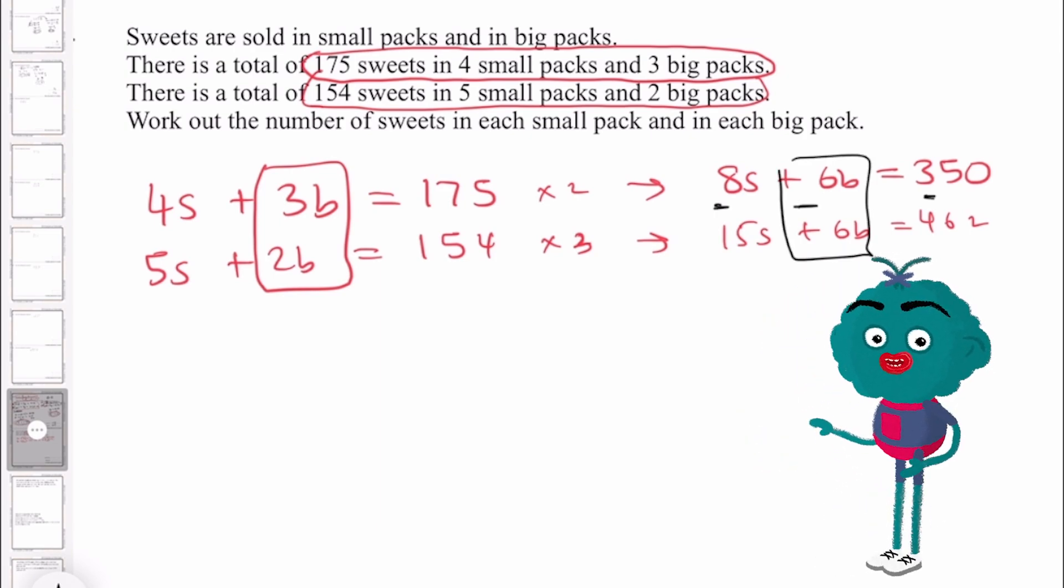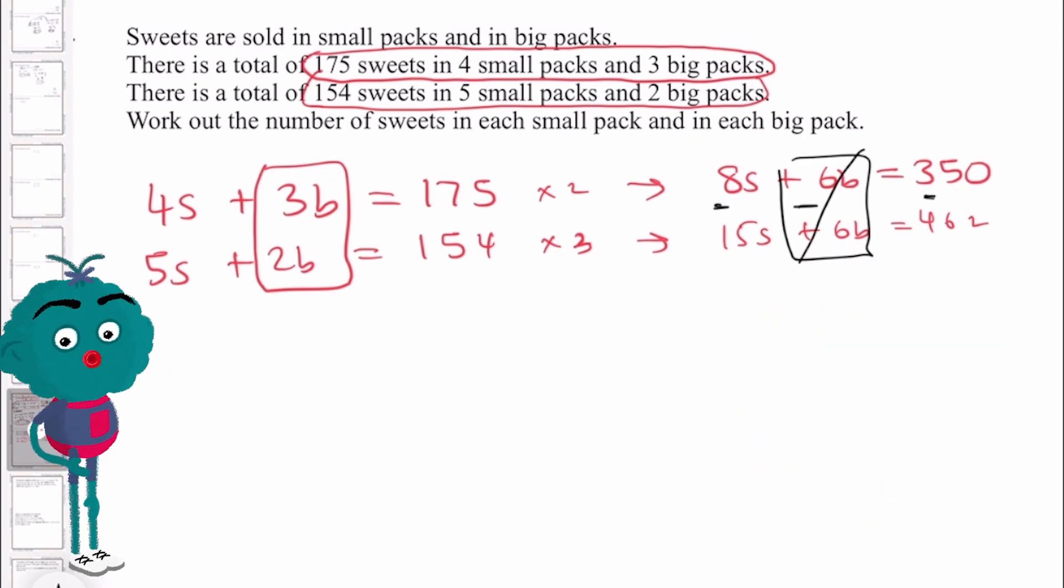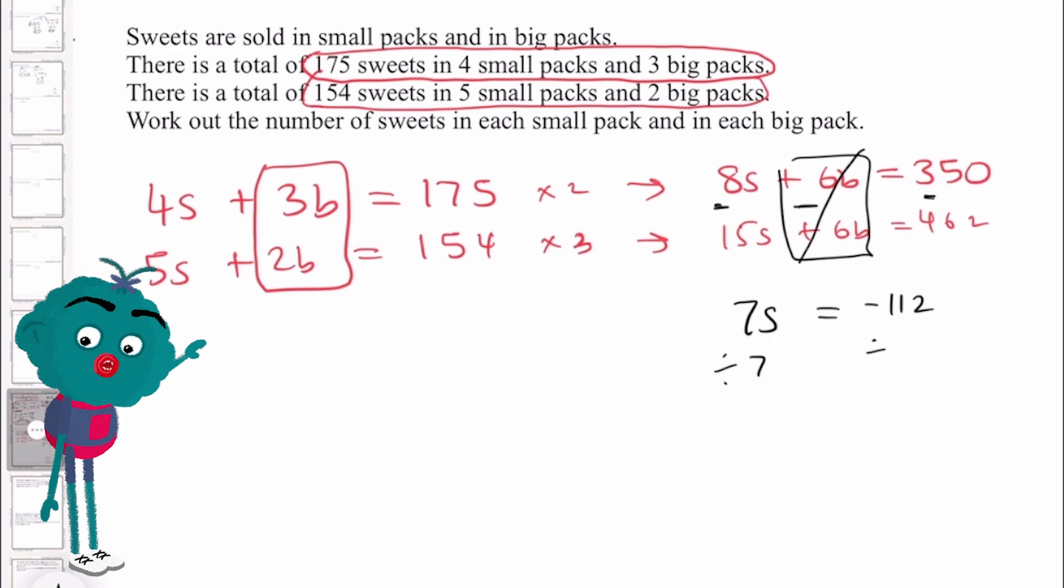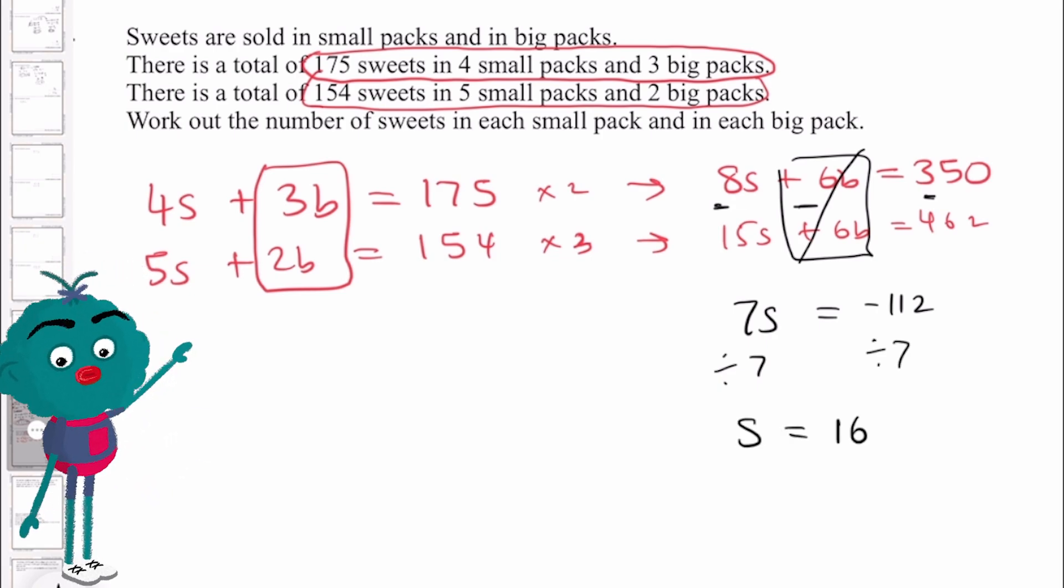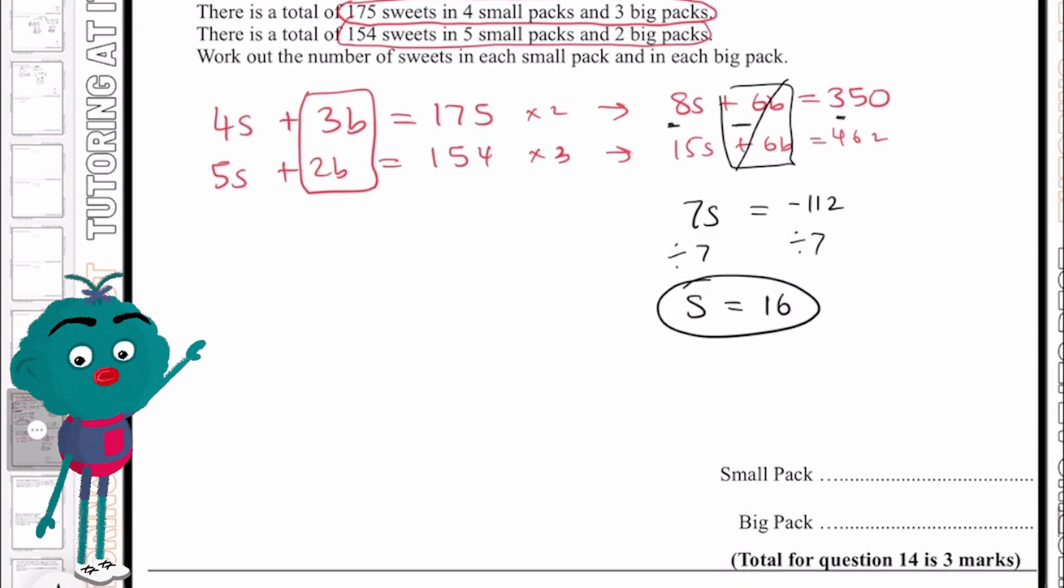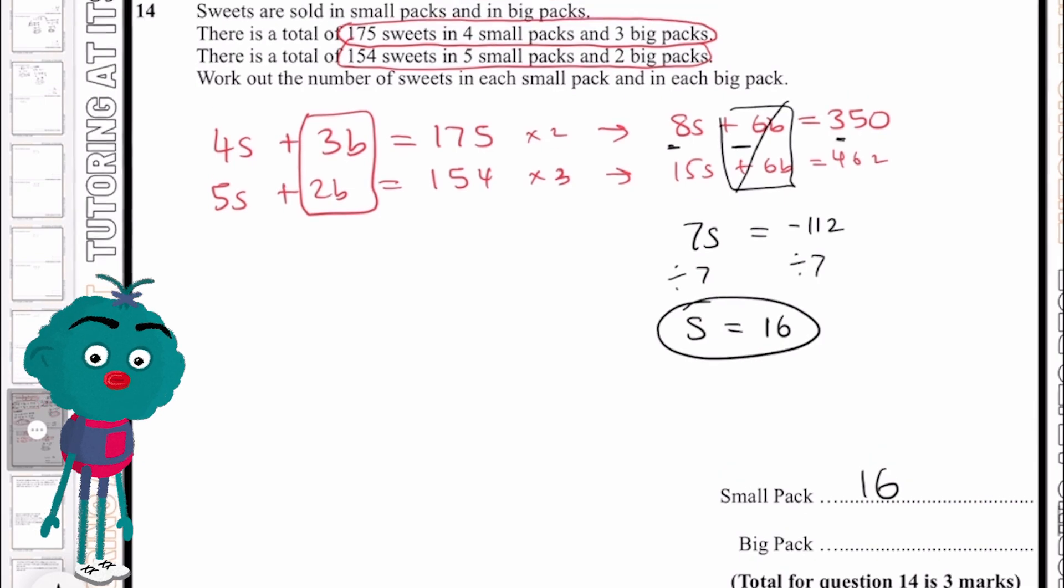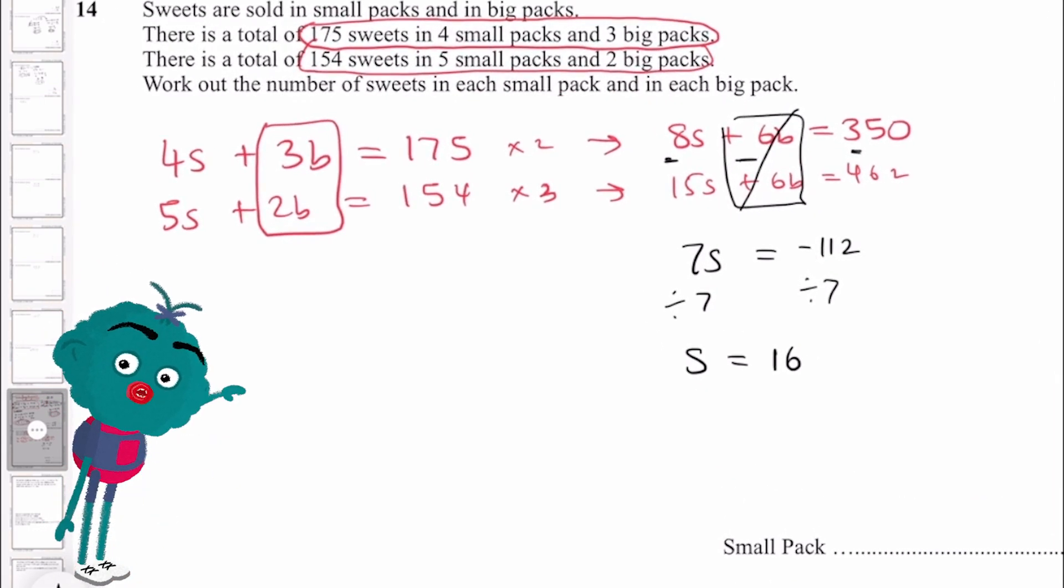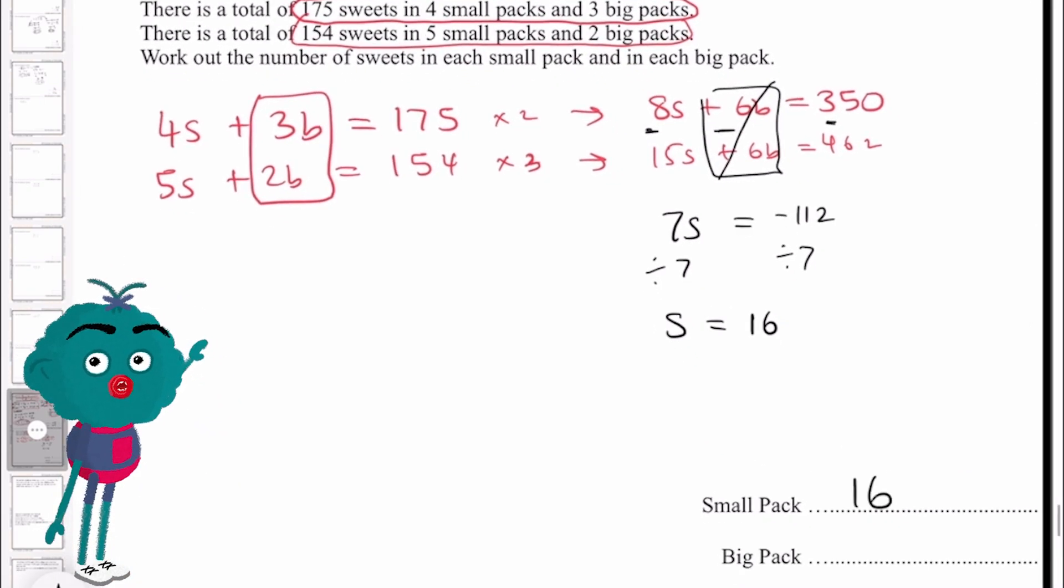Eliminating your b, so that's now gone from the equation. We are left with 7s, which equals minus 112. We then divide both sides by seven. And we now know that s equals 16. So now we've worked out the number of packets in a small packet, it's 16.